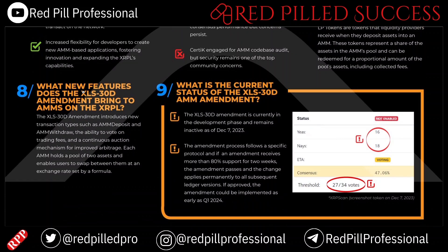What new features does the XLS-30D amendment bring to AMMs on the XRPL? The XLS-30D amendment introduces new transaction types such as AMM deposit and AMM withdrawal, the ability to vote on trading fees, and a continuous auction for improved arbitrage. Each AMM holds a pool of two assets and enables users to swap between them at an exchange rate set by a formula.